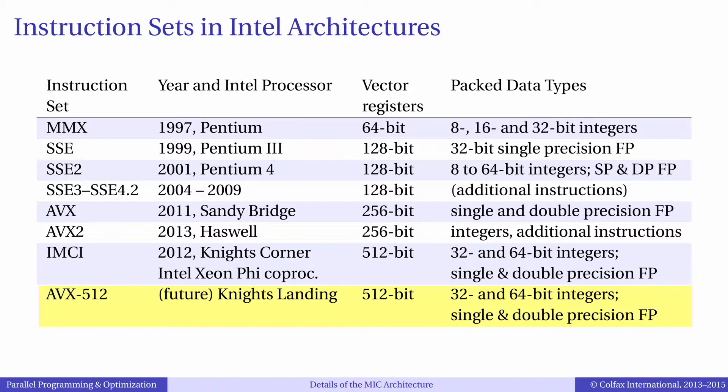It has been announced that the second generation of Xeon Phi based on the Knight's Landing chip will also have 512-bit wide vector registers, but will use a different instruction set called AVX512.